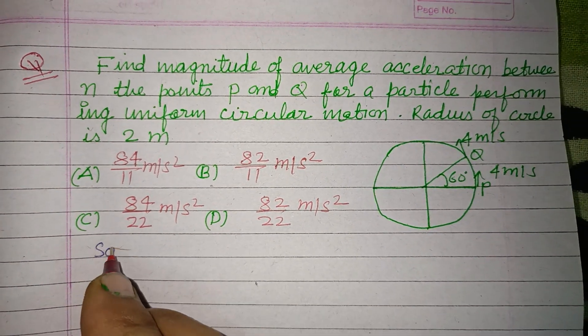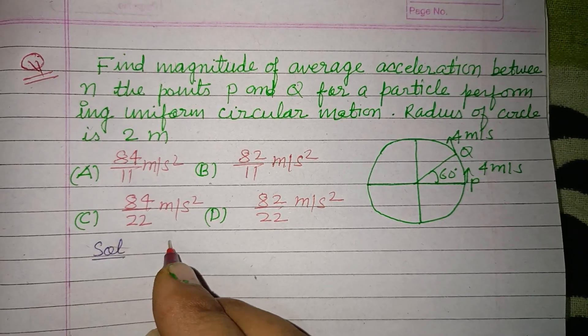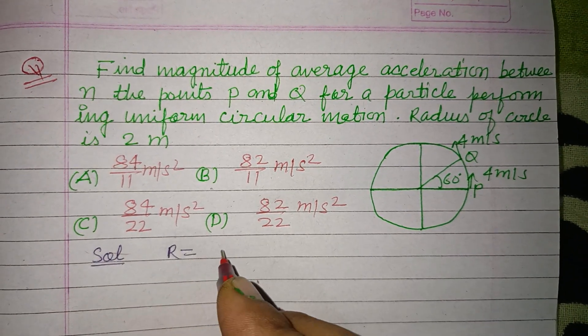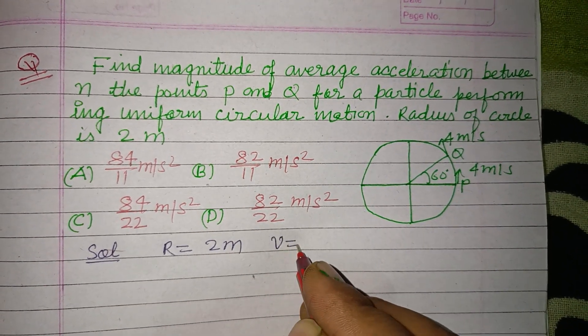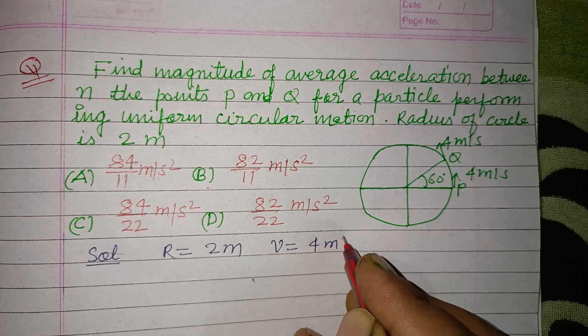Here radius of circle R is given. So, R is 2 meter and speed is also given which is v, 4 meter per second.